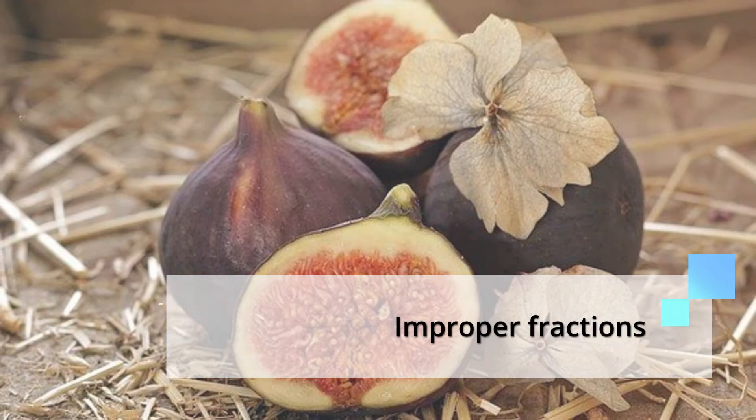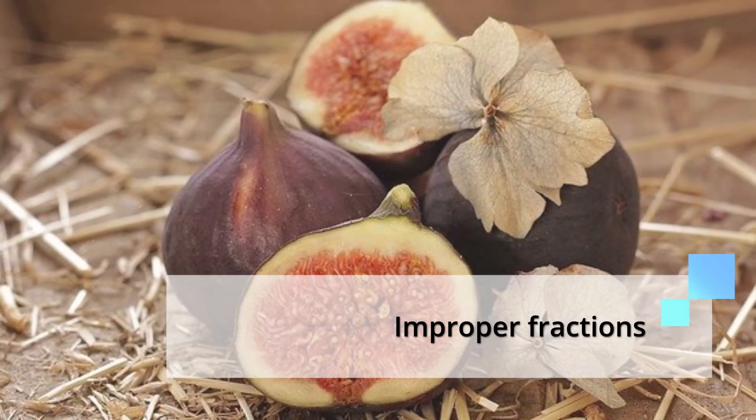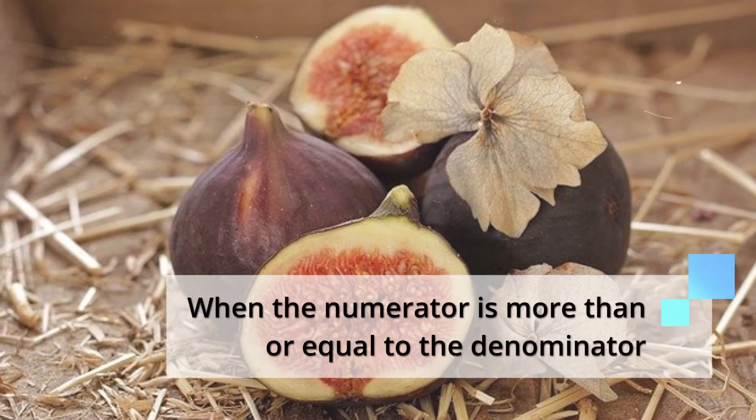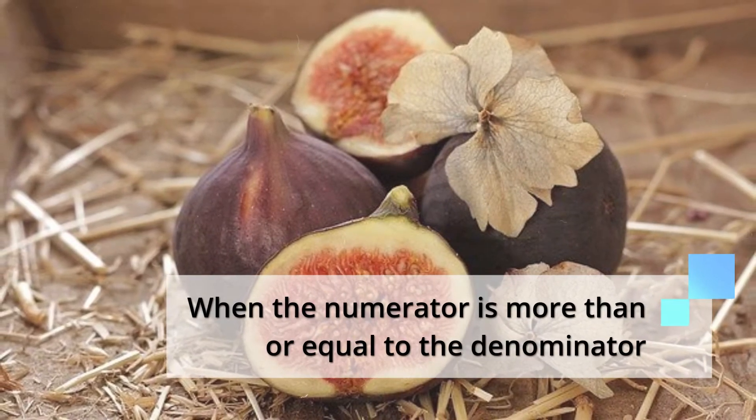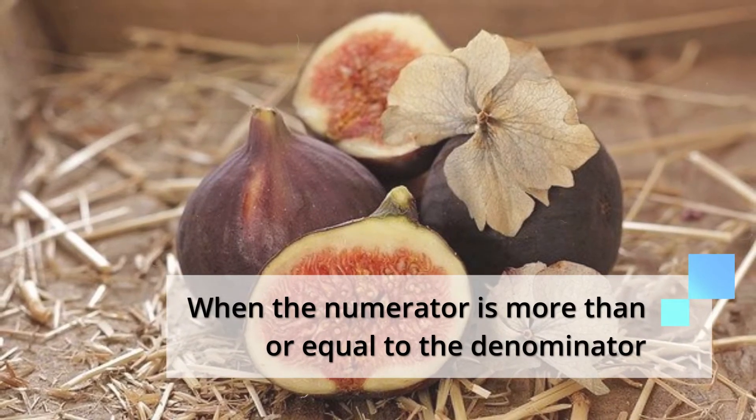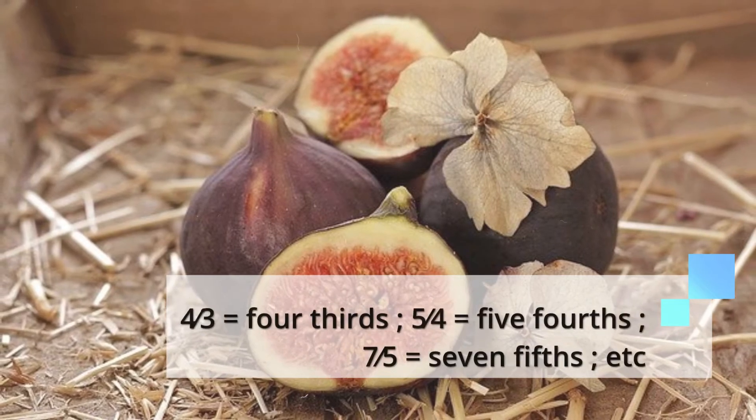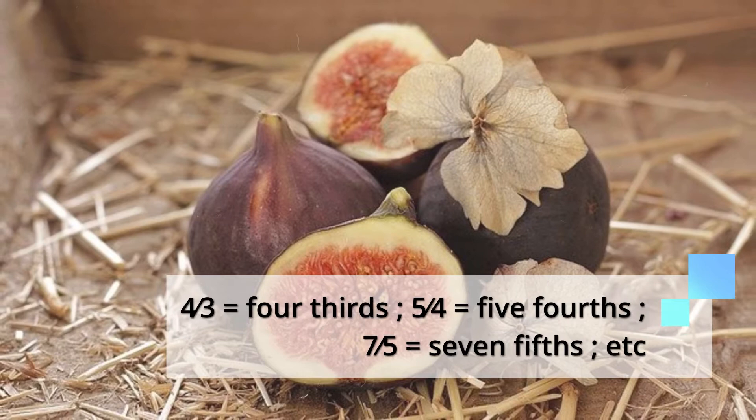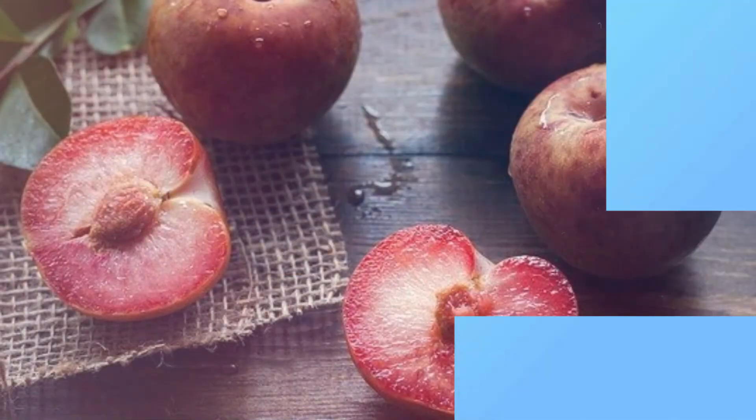The third type of fraction is called improper fractions. This is when the numerator is more than or equal to the denominator. For example, 4 thirds, 5 fourths, 7 fifths, and so on.